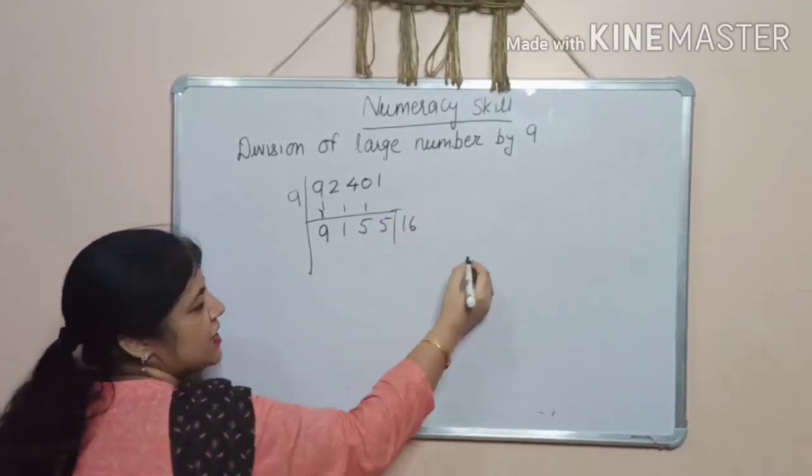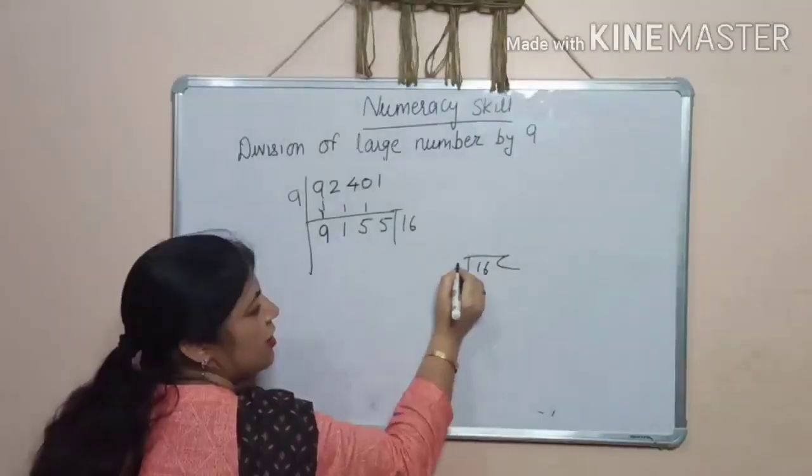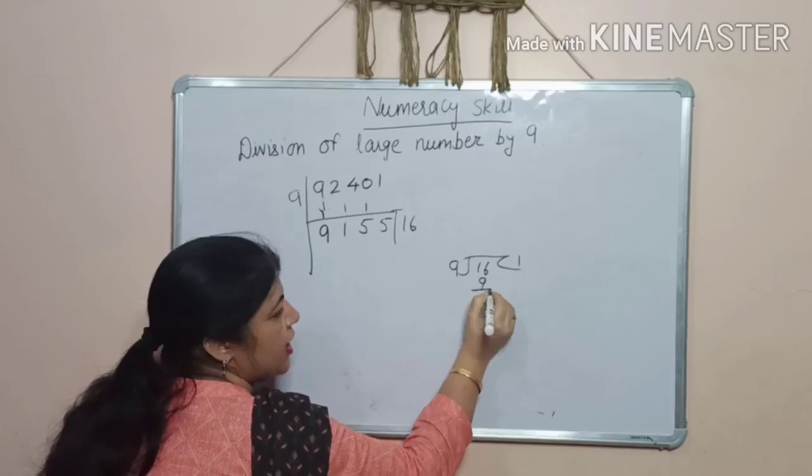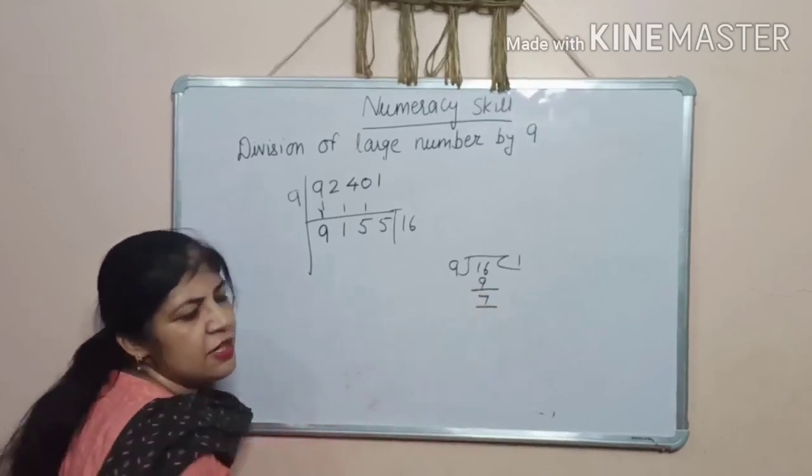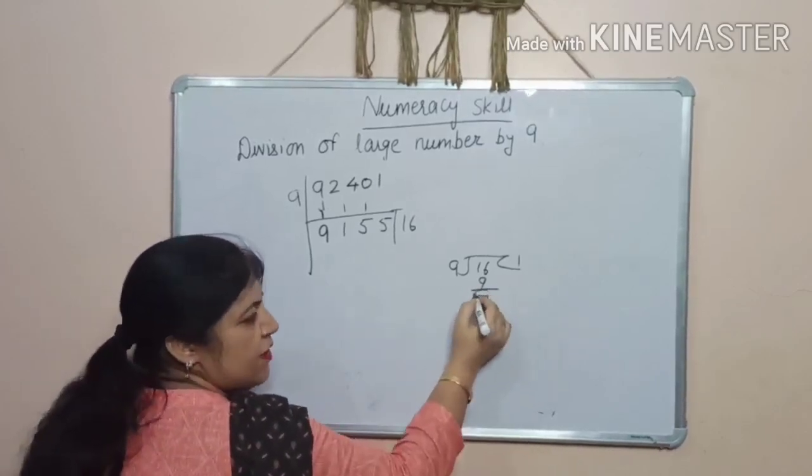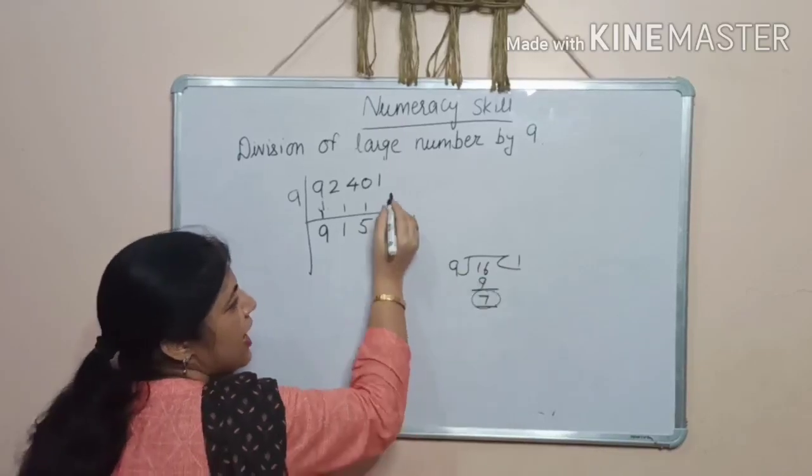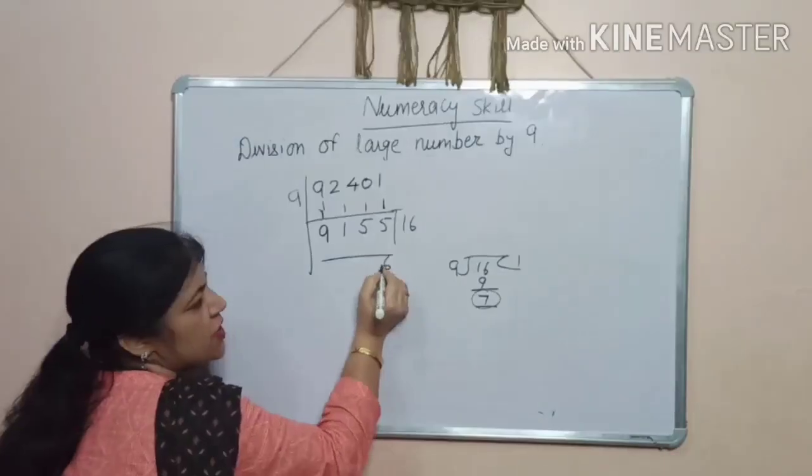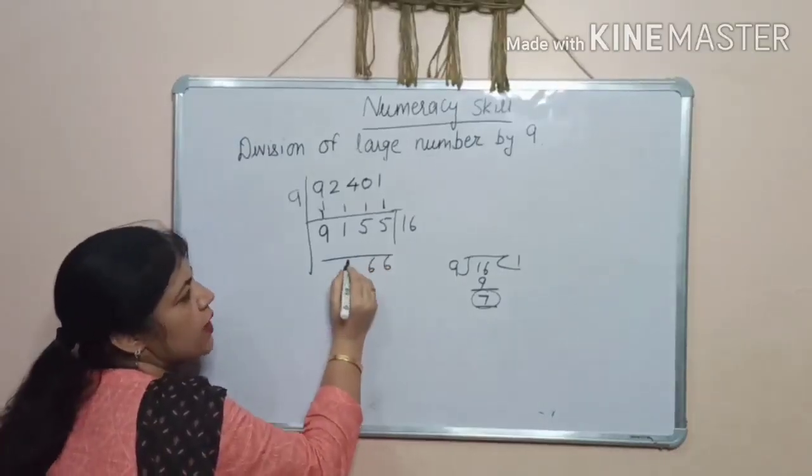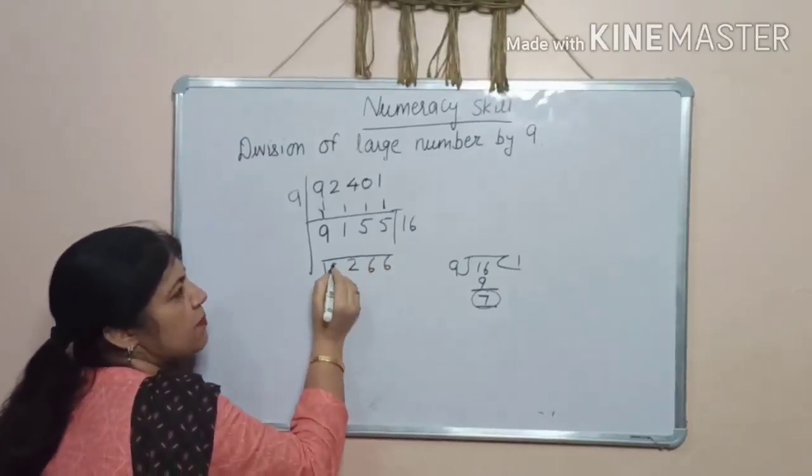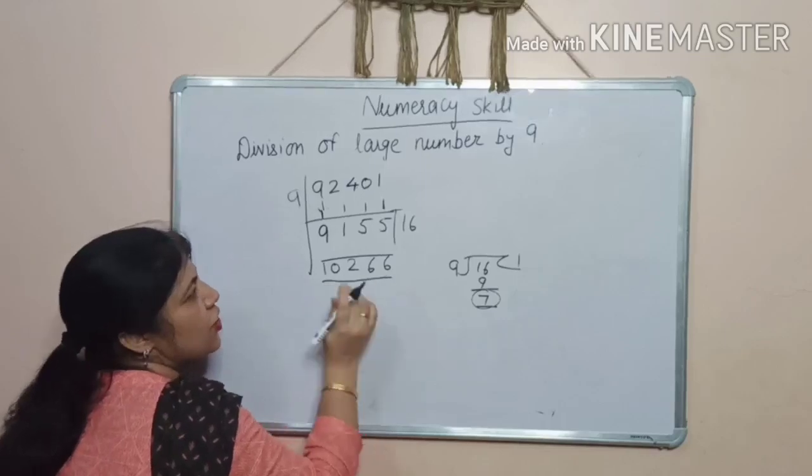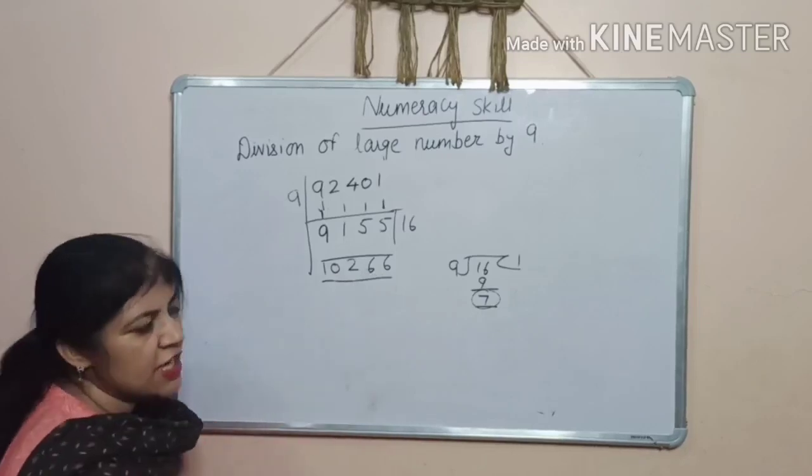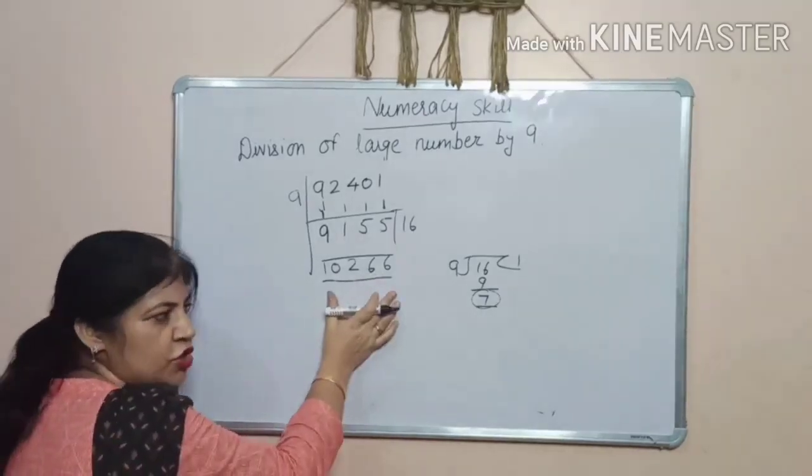And now, divide 16 by 9. 9 into 9, 1. 9. 16 minus 9. 7. So, 7 will be your remainder. And add this quotient here. 1. Now, add this. 5 plus 1, 6. 5 plus 1, 6. 1 plus 1, 2. And 9 plus 1, 10. So, 10,266 is your quotient. And 7 is your remainder.